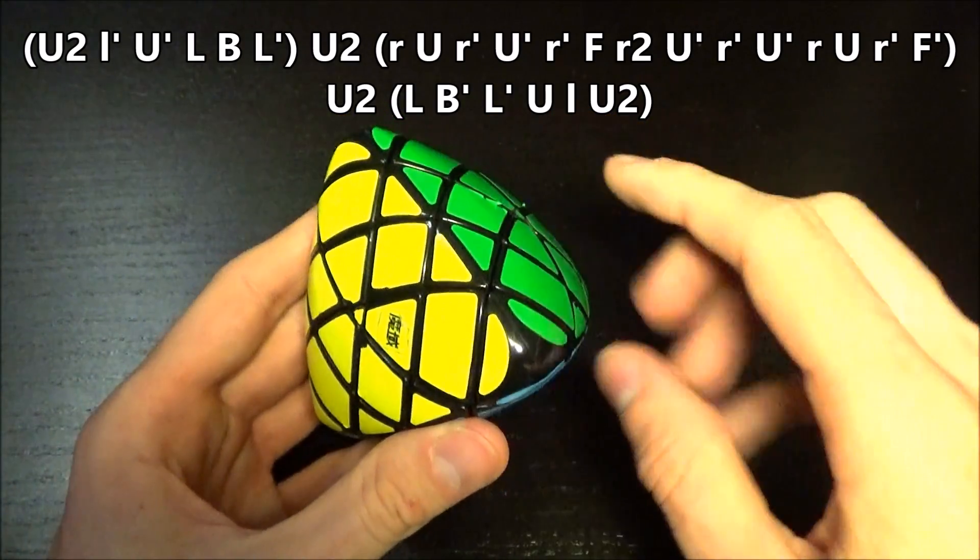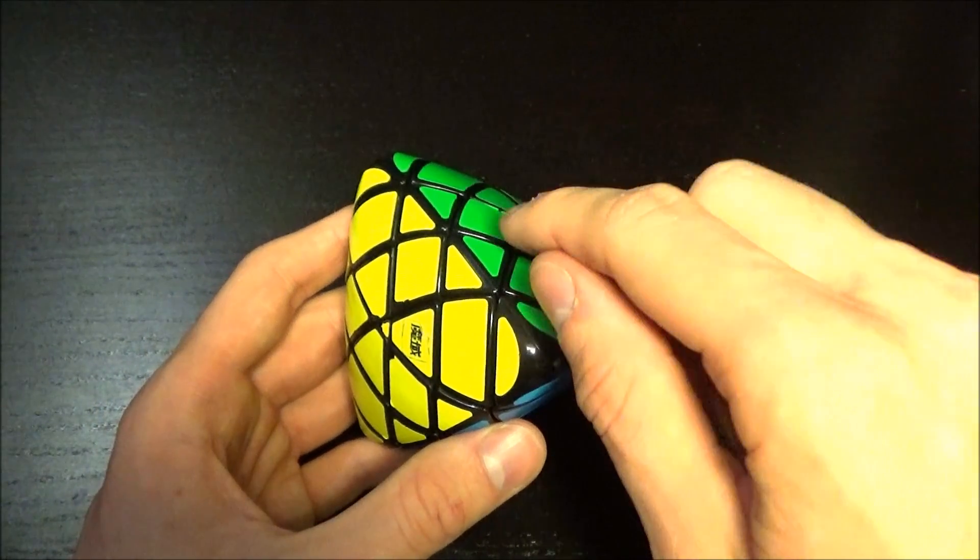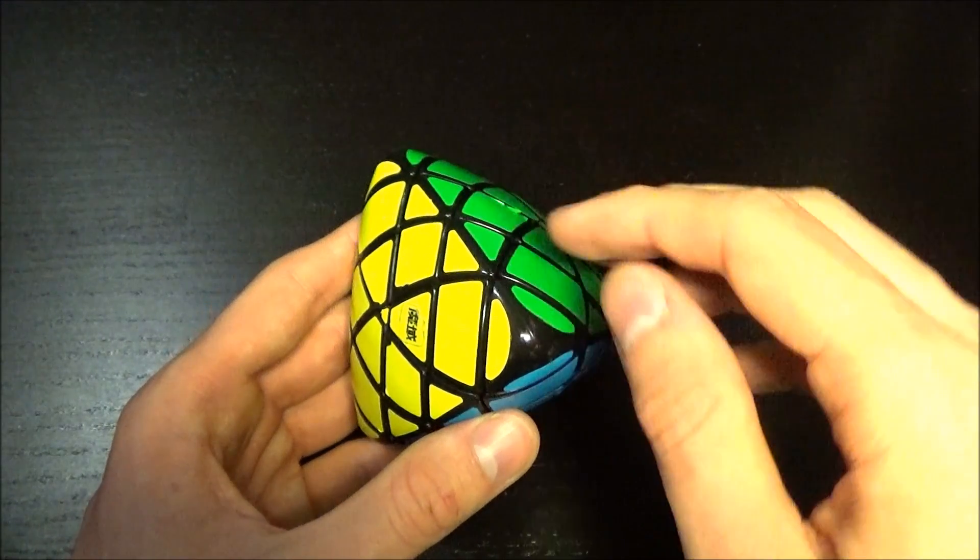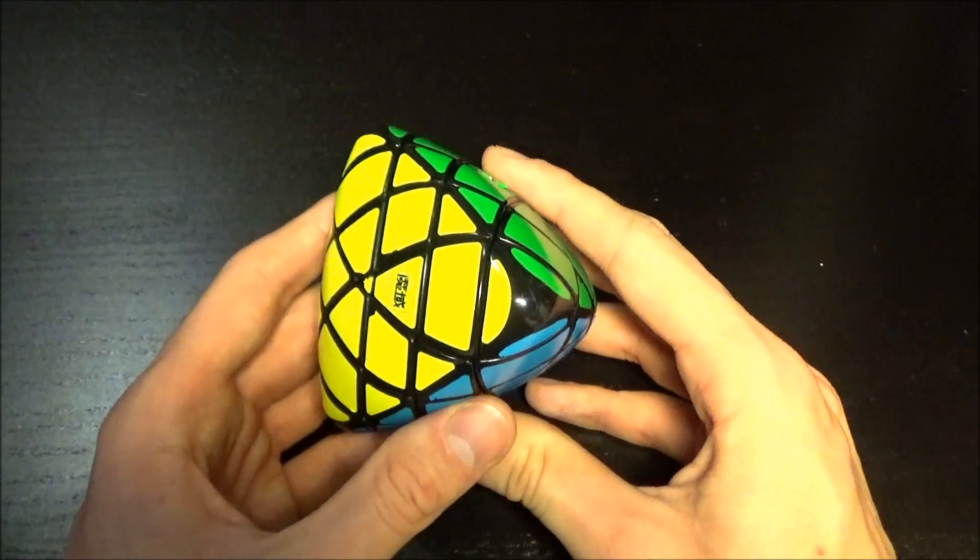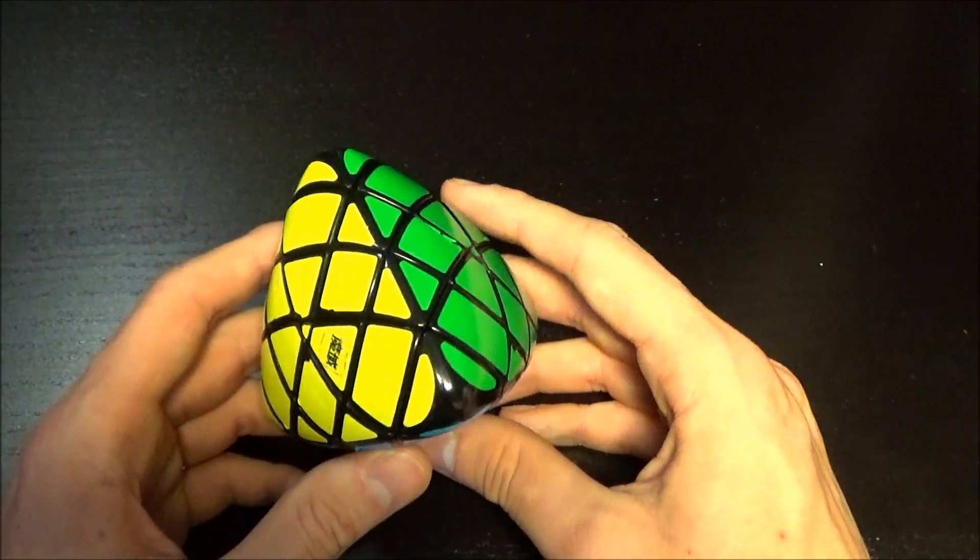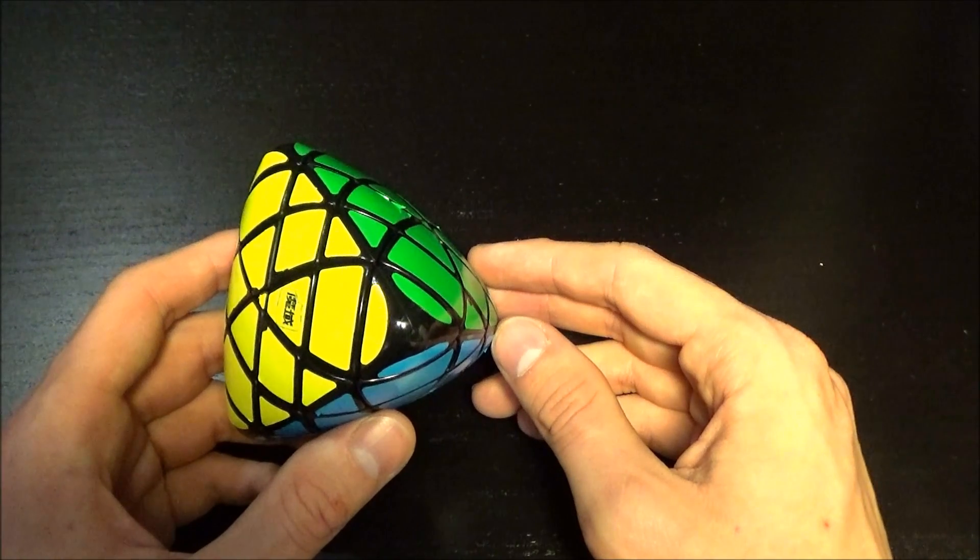And now we have switched these two corners here. If you have the case that you have to rotate the centerpiece 90 degrees, you also do this parity algorithm by holding the puzzle like this, and after that you do the last layer how you normally did it on 3x3.